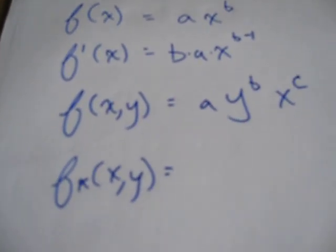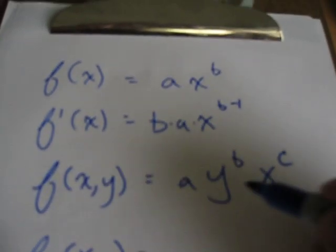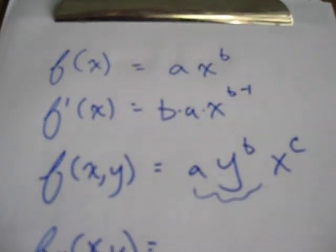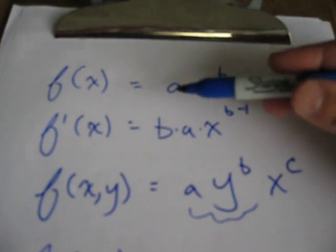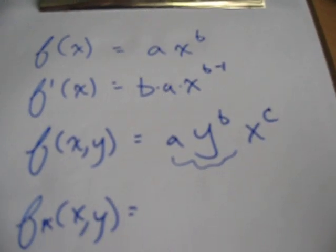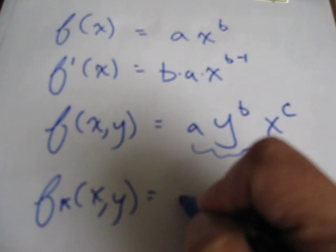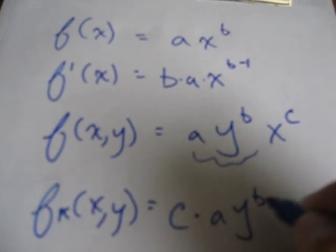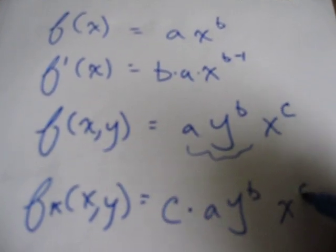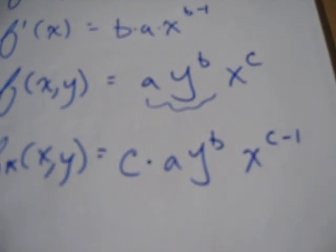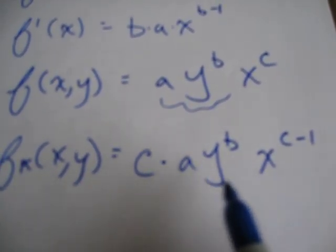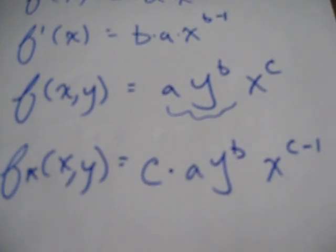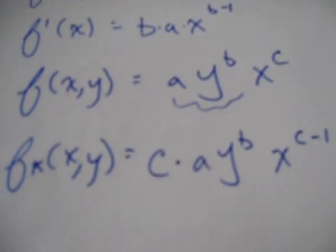You follow the same rules. So what do you do? Well, you recognize these two things have nothing to do with x, so they work just like this a thing up here. So you drop the exponent on x down: c times a y to the b, x to the c, and then you subtract 1 from the exponent on x. You don't touch the a y to the b stuff because you're taking the derivative with respect to x, not y.